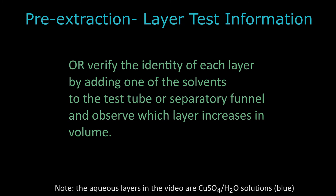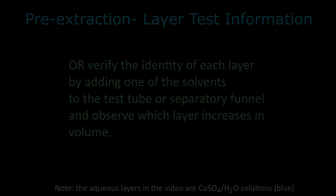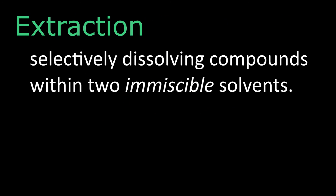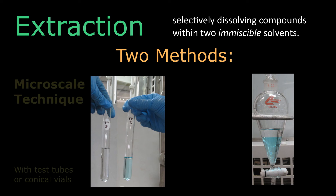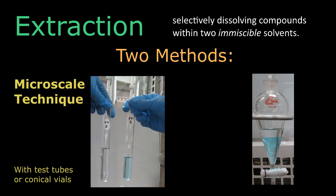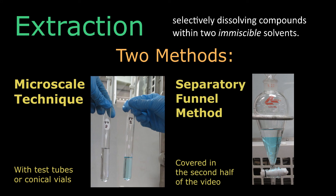Now that we've got the basics down, let's see how this technique actually works. Extraction involves selectively dissolving compounds within two immiscible solvents. Extraction can be performed via two methods: first, the microscale technique, using either test tubes or conical vials, covered in the first half of the video; and second, the separatory funnel method, covered in the second half of the video.